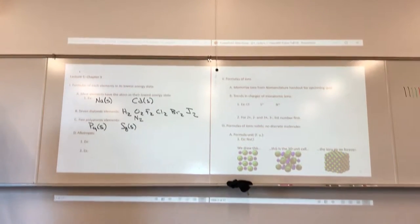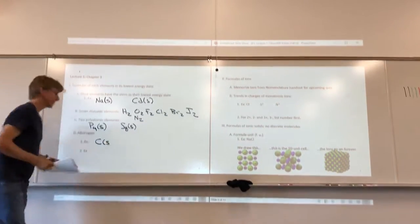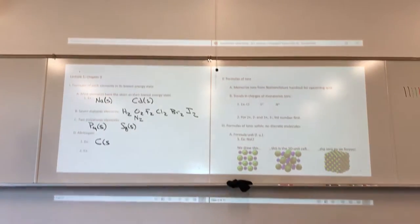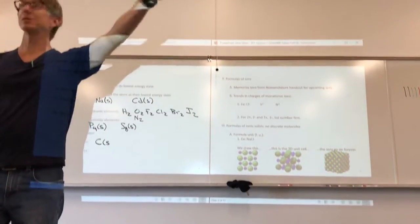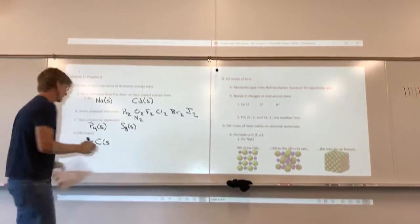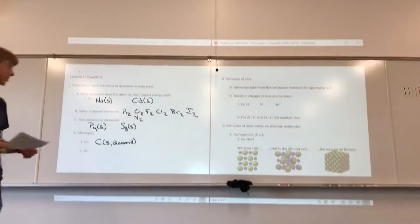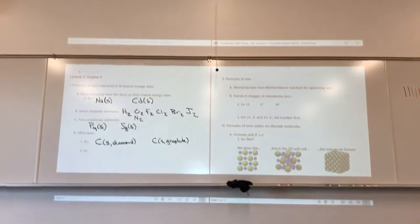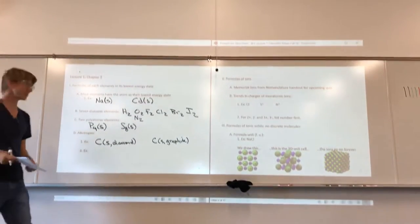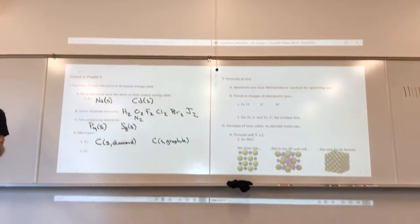Allotropes is a term that talks about different forms of the same element. For example, carbon — we're going to talk about two different forms of carbon solid. Diamond is pure carbon. Graphite is also pure carbon. When you work with carbon at Sac City College, you're going to use graphite. These are examples of two allotropes of carbon. They have different types of covalent bonding.